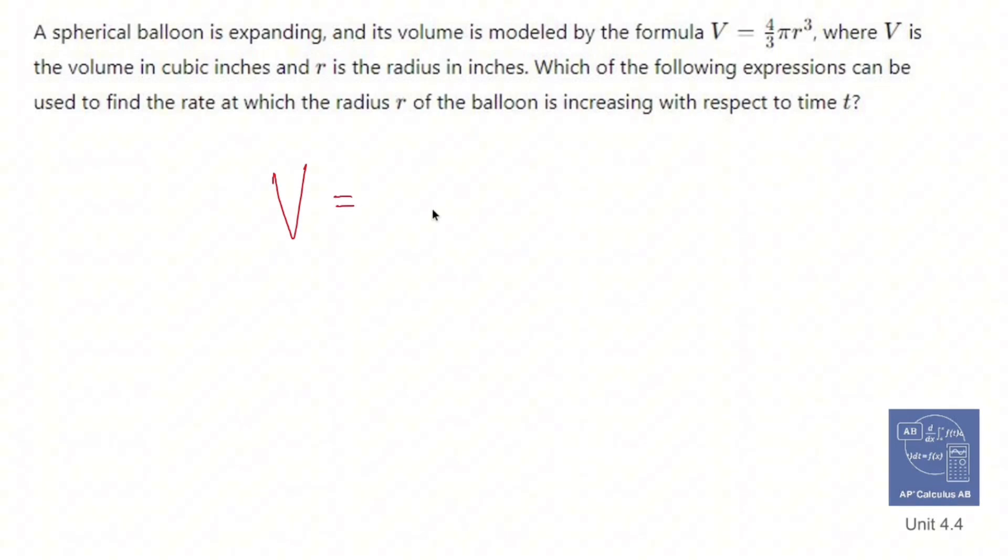So let's write out our formula V equals 4 thirds pi r cubed. What I want to do is differentiate both sides with respect to t. So we're going to d/dt both sides. Now, the derivative with respect to t of V is just 1, but since we're taking the derivative of V, we attach dV/dt like so.